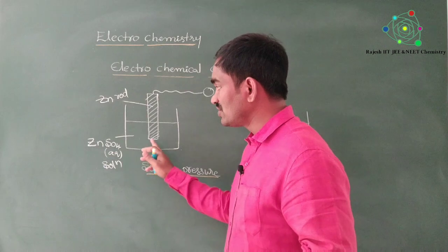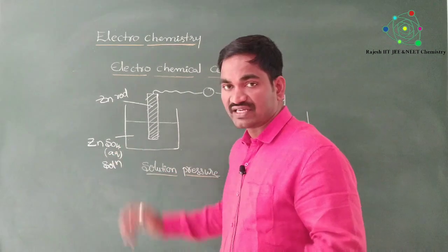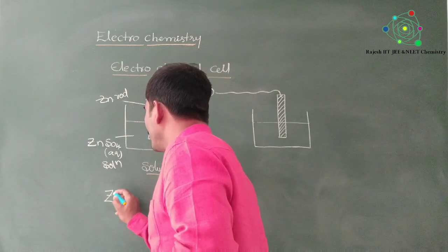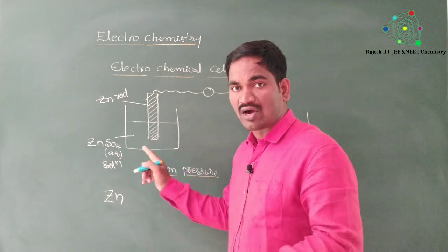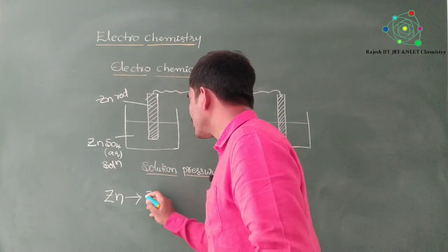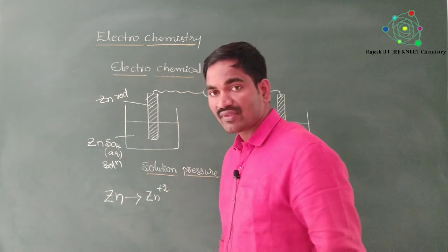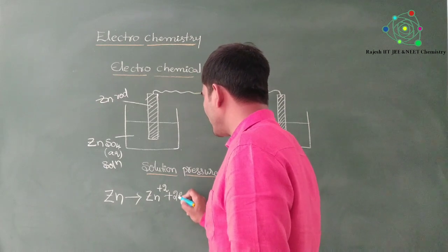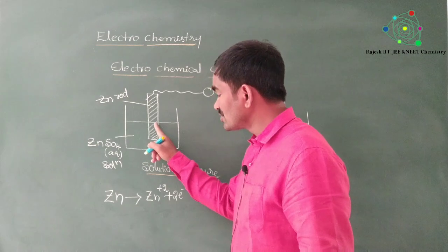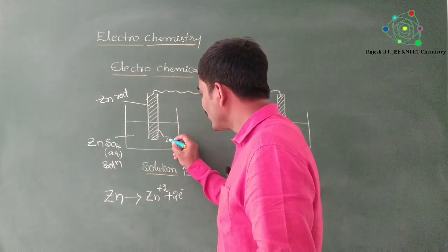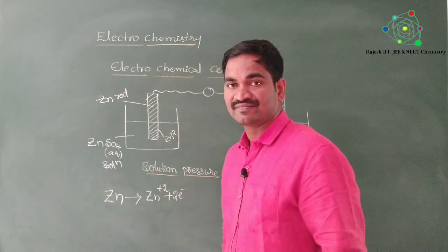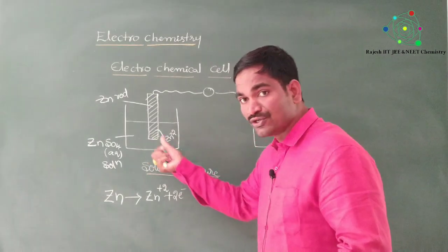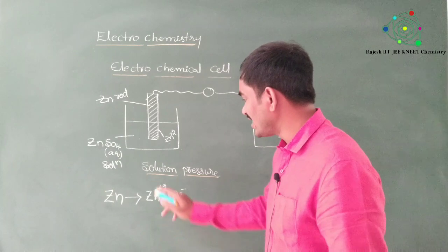Take a zinc rod suspended into an aqueous solution of zinc sulfate. What is going on here? Neutral atoms present in the zinc rod convert into ions — this is nothing but oxidation. The loss of electrons causes neutral atoms to convert into ions, and those ions enter into the solution. Due to this movement, some pressure is generated, and that is considered as solution pressure.